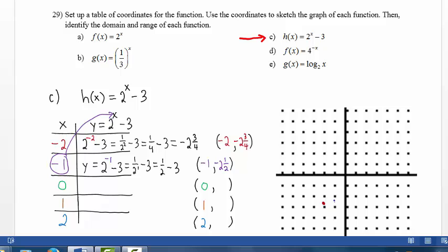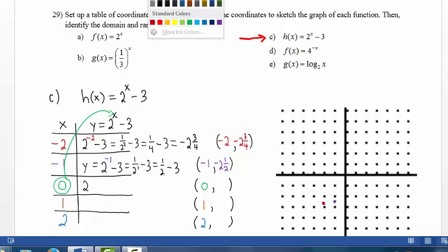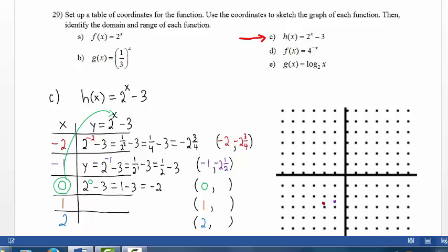From the origin, left 1 and down 2 and a half. When x equals 0, the y value is 2 raised to the 0 minus 3. 2 to the 0 is 1 and 1 minus 3 is negative 2. So we plot 0, negative 2.